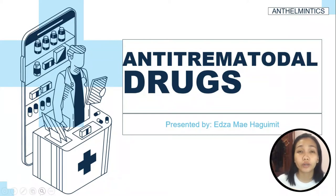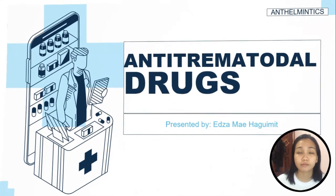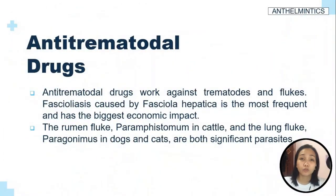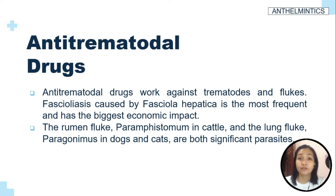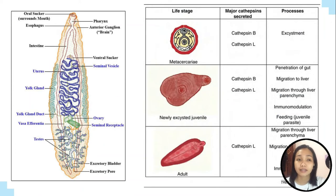In this presentation, we're going to talk about anti-trematodal drugs. Anti-trematodal drugs work against trematodes and flukes. Fasciolysis, caused by Fasciola hepatica, is the most frequent and has the biggest economic impact. The rumen fluke, or Paramphistomum in cattle, and the lung fluke, Paragonimus in dogs and cats, are both significant parasites.